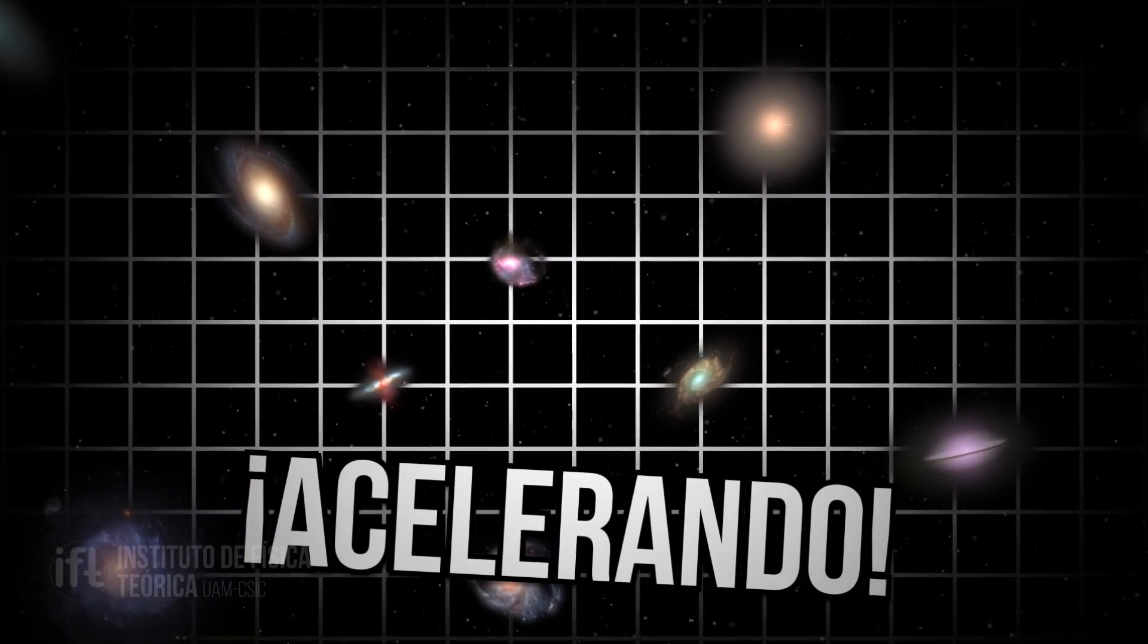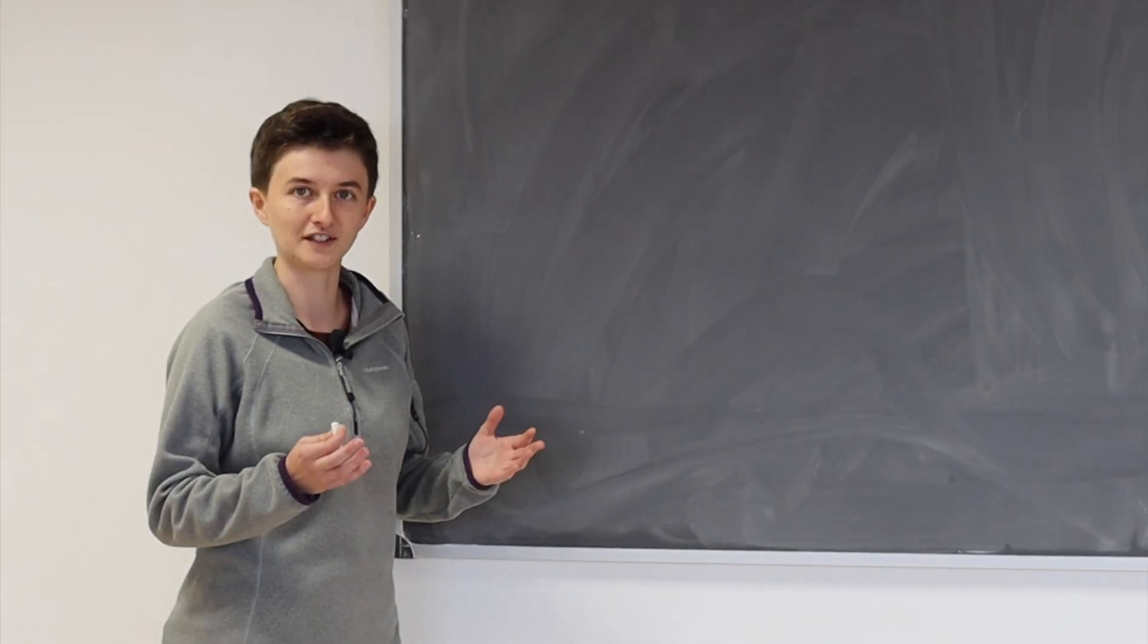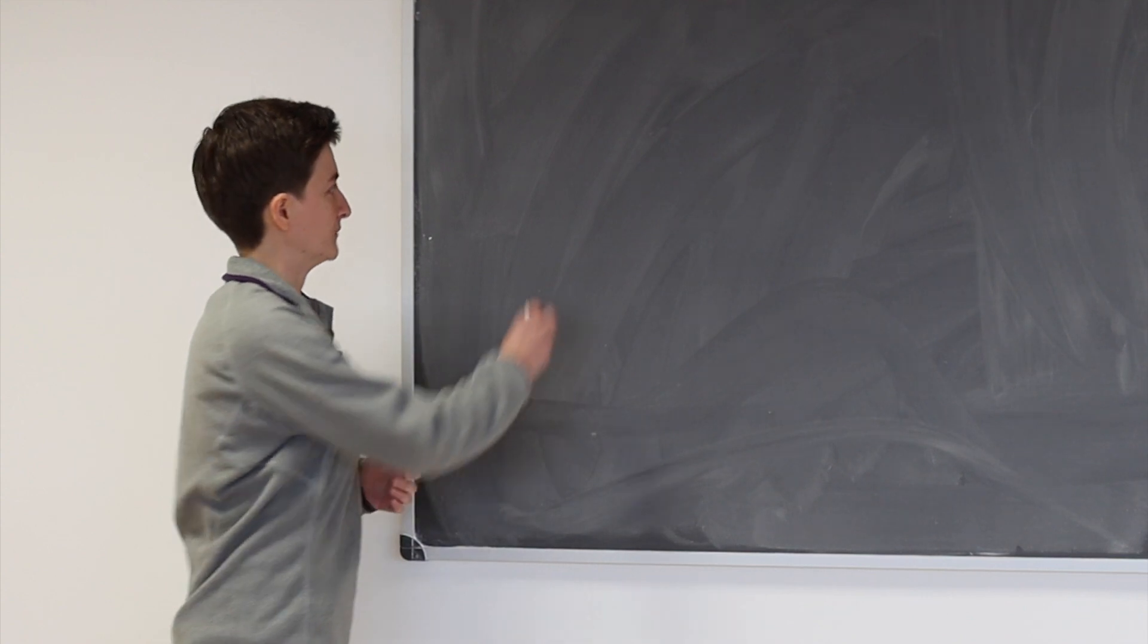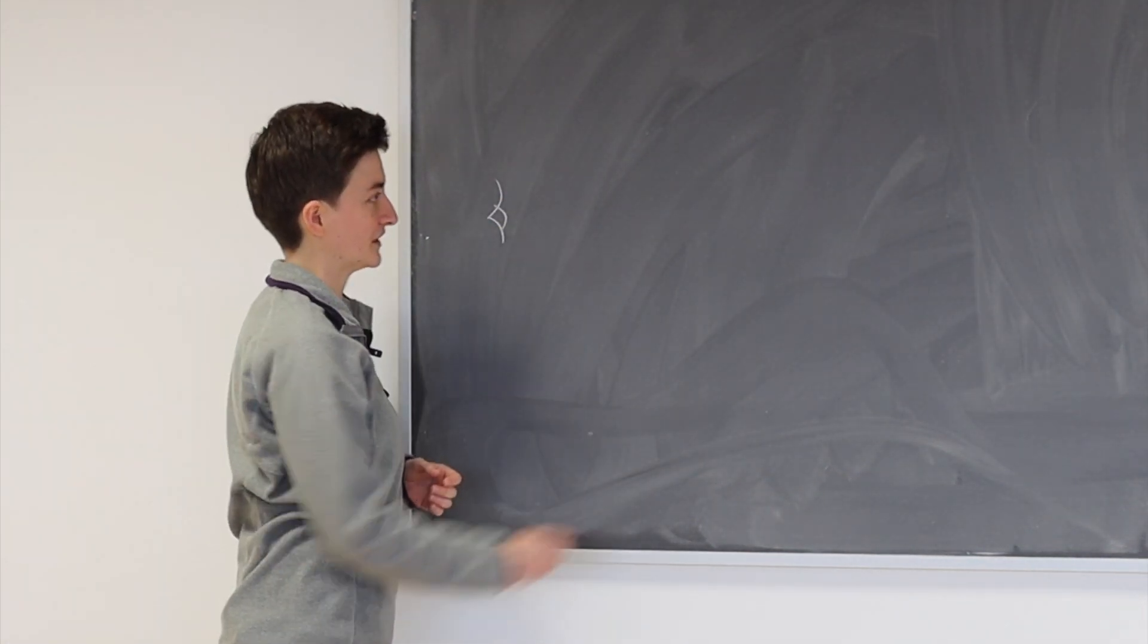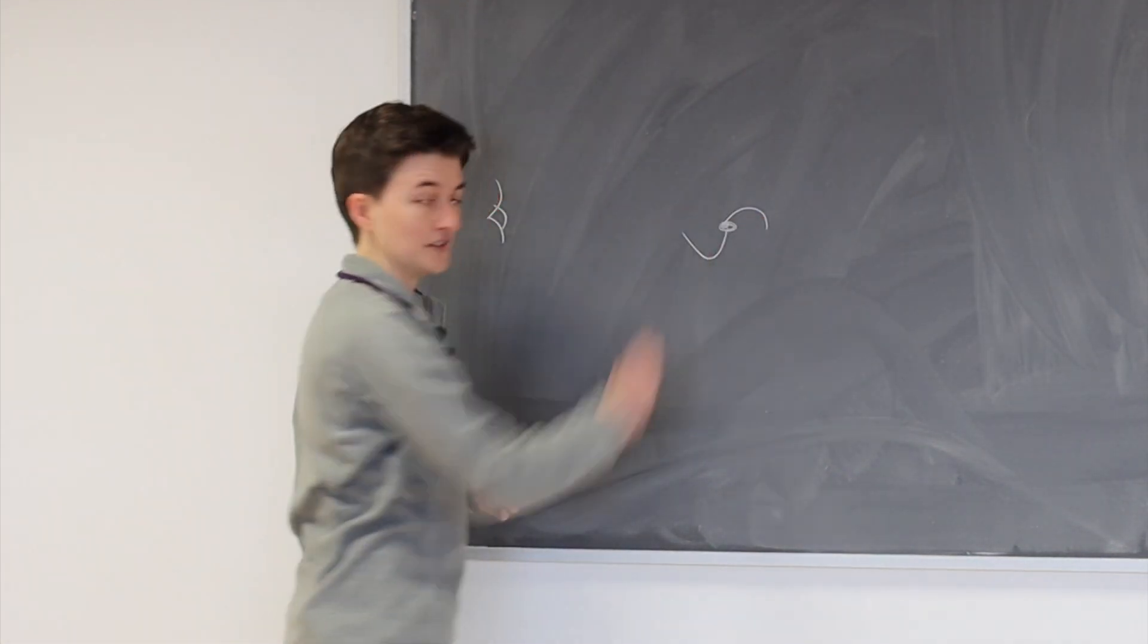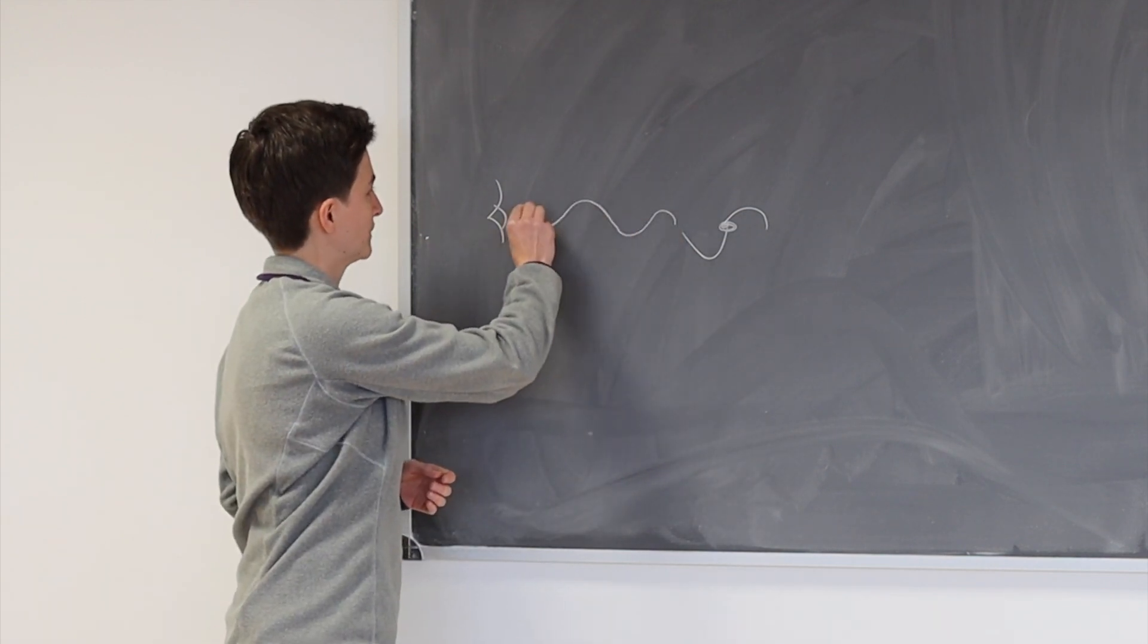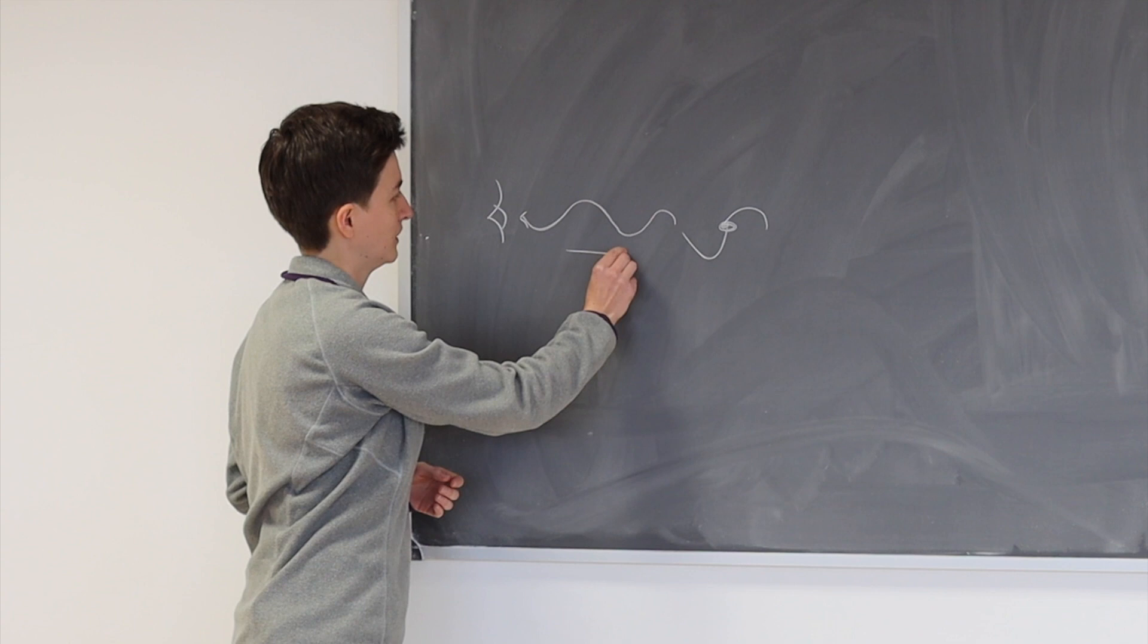So how was this discovery made? Observations of distant galaxies were made, so galaxies outside our own Milky Way. So I'm going to draw us as the observer here and some distant galaxy. And the wavelength of the light from these galaxies was observed.